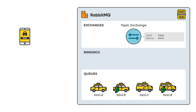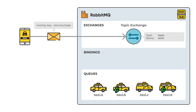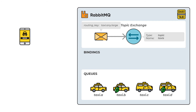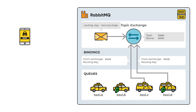The topic exchange supports strict routing key matching, like a direct exchange, but will also perform wildcard matching using star and hash as placeholders. In another example, a customer orders a large taxi but does not care about the taxi type. The topic exchange routes this message to all taxis bound as a large taxi.